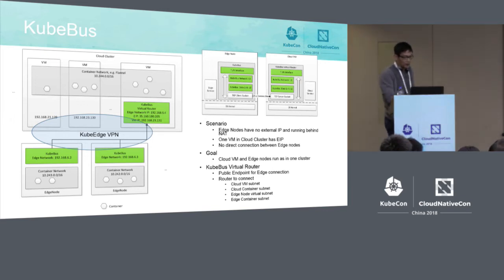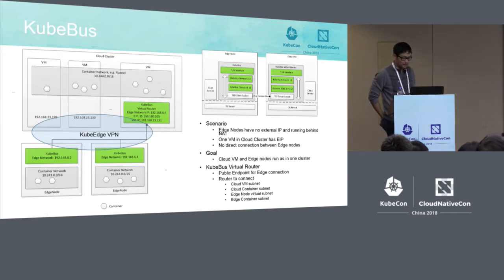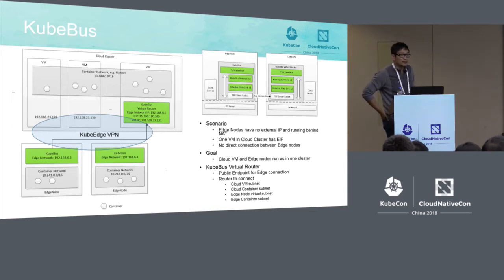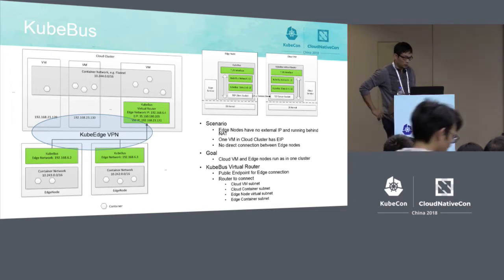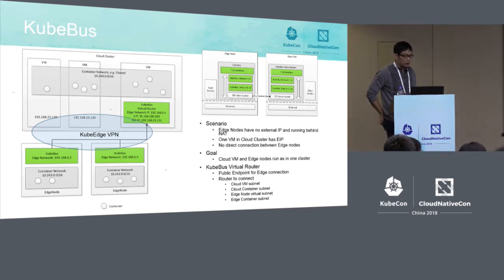This work is essentially configuring routing rules. Because all container networks are linked as a VPN, we can use existing microservice frameworks like Istio to handle communication without much code change.